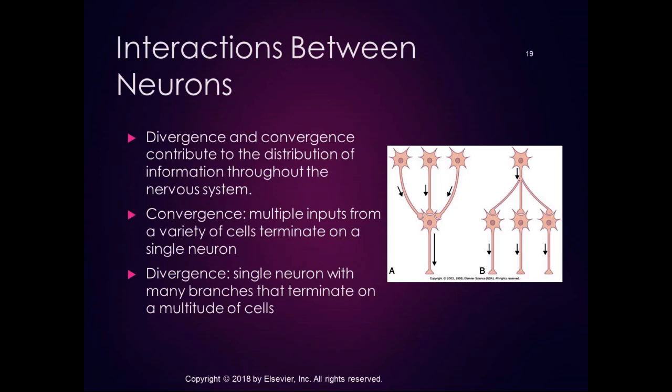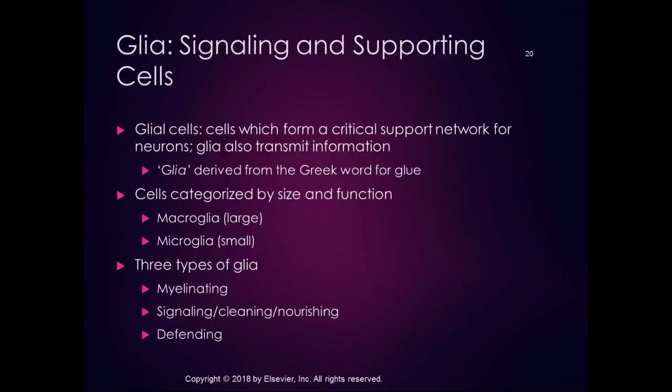Besides neurons, we have other cells in the nervous system — signaling and supporting cells called glial cells. They form a critical support network for neurons and also transmit information. The word glia is derived from the Greek word for glue — originally thought to just glue the nervous system together, but now we know they have a lot of functional significance. Glial cells are categorized by size and function: macroglia are large and microglia are small. There are three functional categories: myelinating, signaling and nourishing, and defending.